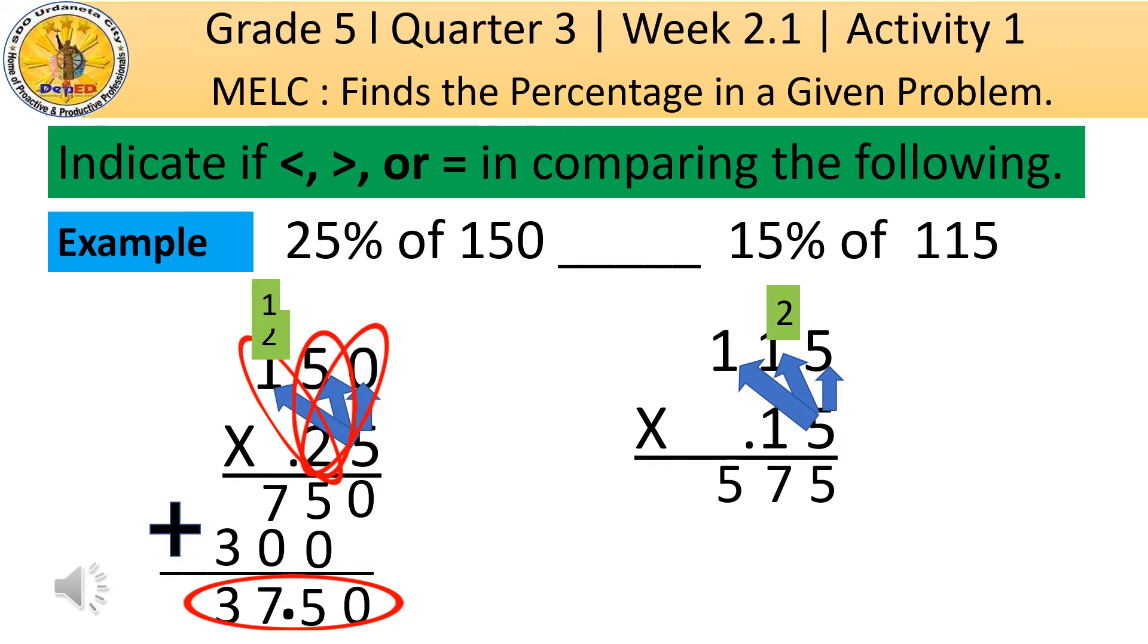Next to do, the second digit of multiplier, which is 1. So, 1 times 5 is equal to 5. 1 times 1 is equal to 1. And, 1 times 1 again is equal to 1.